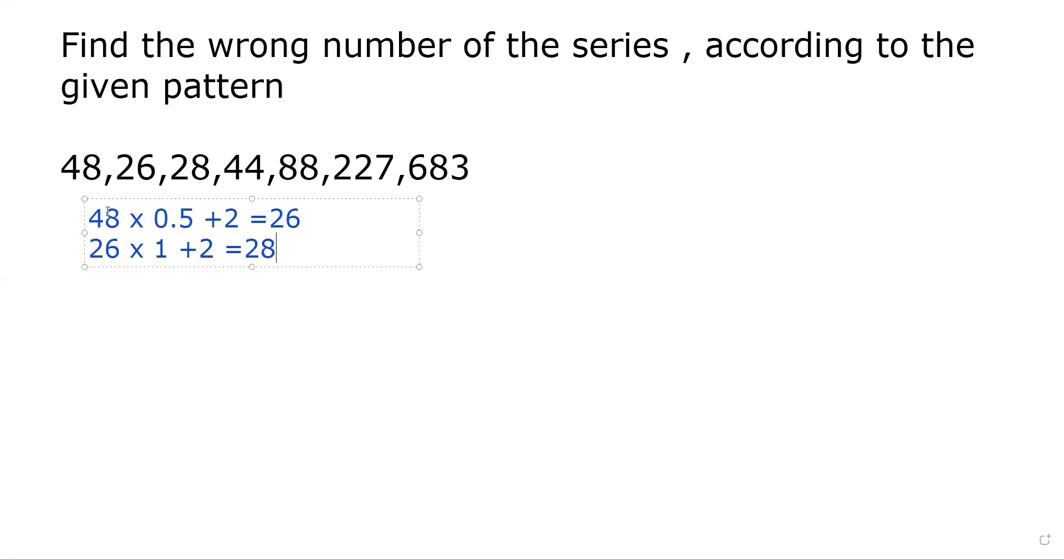We can see that we have a pattern in these equations: first × 0.5 + 2, and second × 1 + 2. The multiplier increases by 0.5 each time. So the first three numbers are okay.